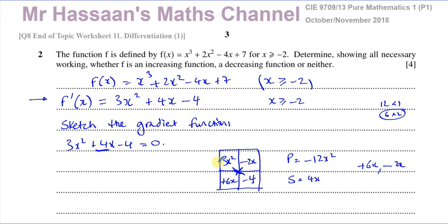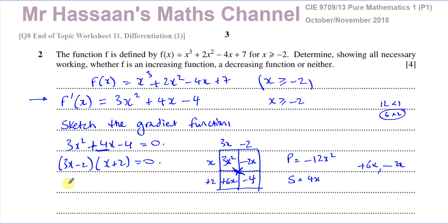After filling in the window, I take the highest common factor of each row. The top row has highest common factor x, giving a factor of x outside. Working through the rectangle: 3x squared divided by x is 3x, and negative 2x divided by x is negative 2, so one bracket is 3x minus 2. The other column gives x plus 2. So 3x squared plus 4x minus 4 factorizes as (3x minus 2)(x plus 2) equals 0, giving x equals 2/3 or x equals negative 2.